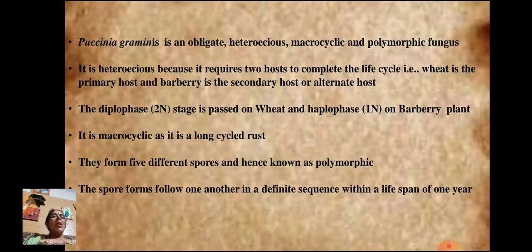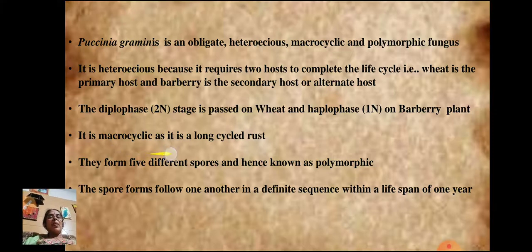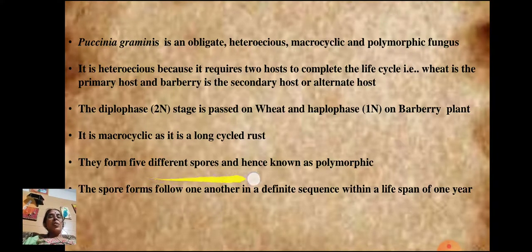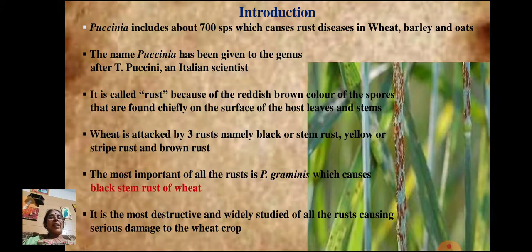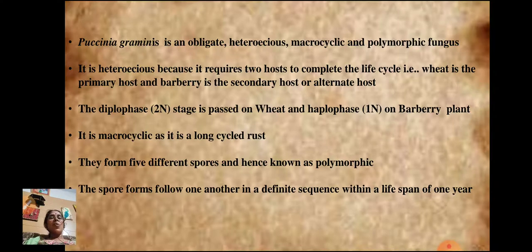On the barberry plant, the haploid phase is passed by the fungus. It is macrocyclic because it is a long-cycle rust that forms five different spores, and hence it is known as polymorphic — polymorphic meaning it produces a number of spores. These spores follow one another in a definite sequence within a life span of one year.